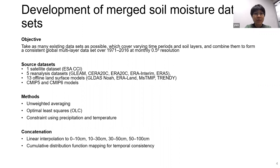The ESA CCI dataset is itself a combination of different satellites with homogenization already performed, but it only covers the surface layer. To supplement that, we also used reanalysis datasets from five sources, offline land surface model simulations from the GLDAS project, the ERA land-only offline simulation, the ISMIP intermodel comparison project, and finally the CMIP5 and CMIP6 climate model simulations.